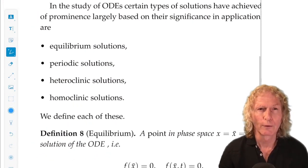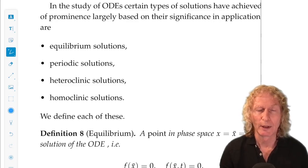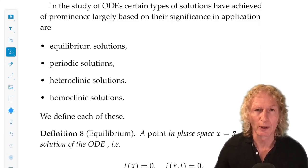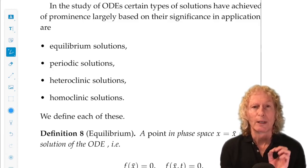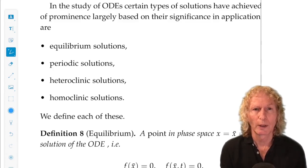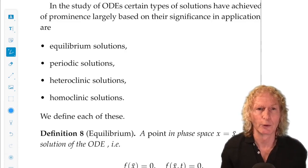Okay, there are four types of solutions of ODEs and I'll be careful to talk about whether they're valid for just autonomous or both autonomous and non-autonomous equations. They are equilibrium solutions, periodic solutions, and heteroclinic and homoclinic solutions.